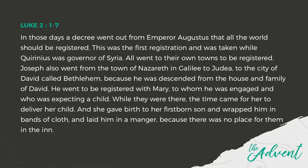Luke's account: In those days, a decree went out from Emperor Augustus that all the world should be registered. This was the first registration, taken while Quirinius was governor of Syria. So all went to their own towns to be registered. Joseph also went from Nazareth in Galilee to the city of David called Bethlehem, because he was descended from the house and family of David, to be registered with Mary, who was expecting a child. While they were there, the time came for her to deliver. She gave birth to her firstborn son, wrapped him in bands of cloth, and laid him in a manger because there was no place for them in the inn.